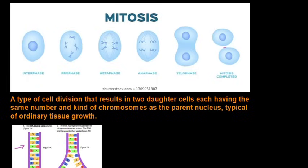Just a quick recap of the process of mitosis which you did in grade 10. It is a type of cell division that results in two daughter cells, each having the same number and kind of chromosomes as the parent nucleus, typical of ordinary tissue growth. In the end you're just going to have two daughter cells that are an exact copy of the original parent cell.